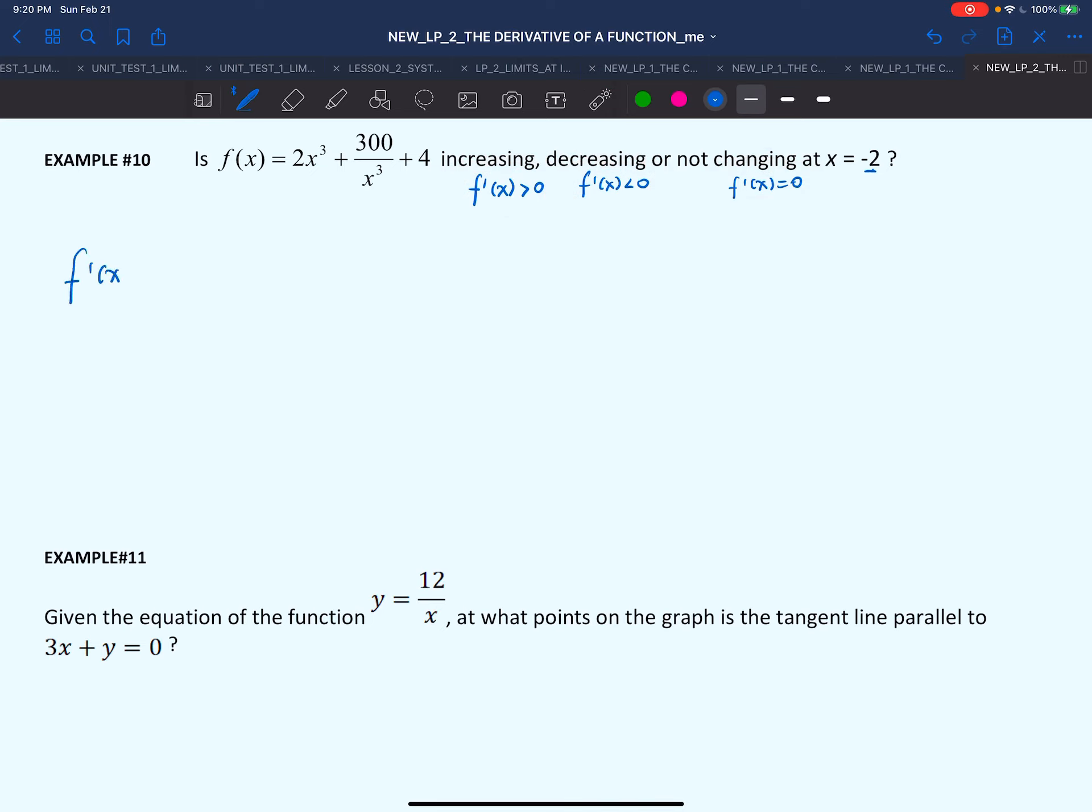First we'll find f'(x). Remember that in here we have denominators. It's easier to write them in exponential form. That will bring the derivative to become 2 * 3x² + 300 * (-3)x^(-4).